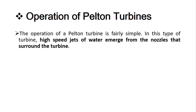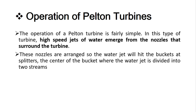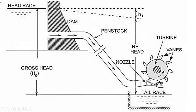The operation of a Pelton turbine is fairly simple. A high-speed jet of water emerges from a nozzle surrounding the turbine. These nozzles are arranged so that the water jet hits the bucket at the splitter — the center of the bucket — where the water jet is divided into two streams. Since the Pelton turbine is a high-head, low-discharge type of turbine, the head is always very high compared to other turbines.